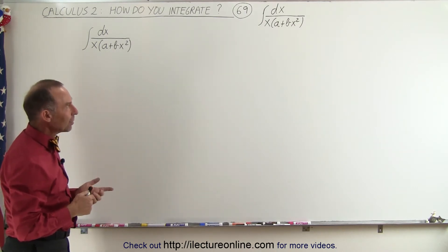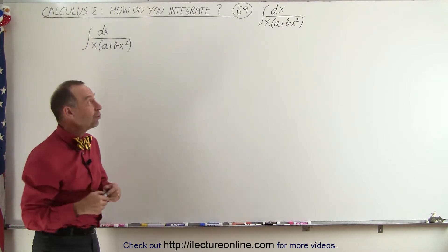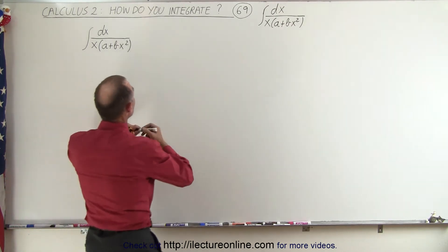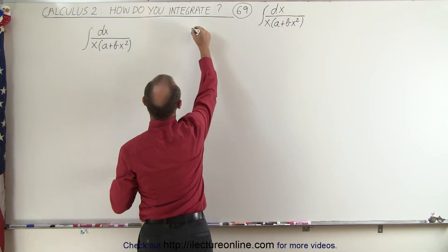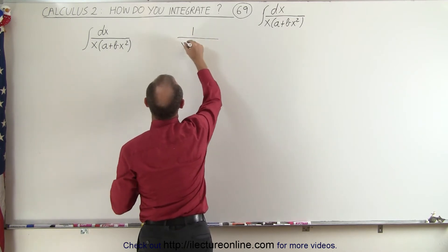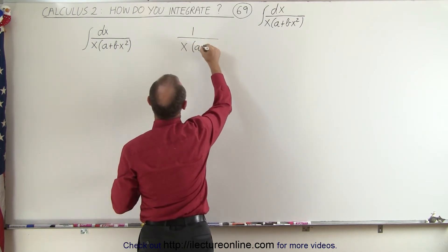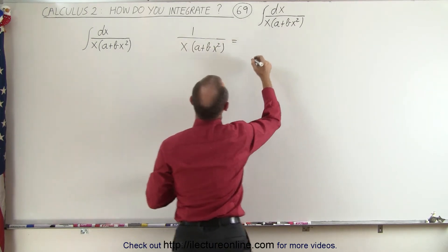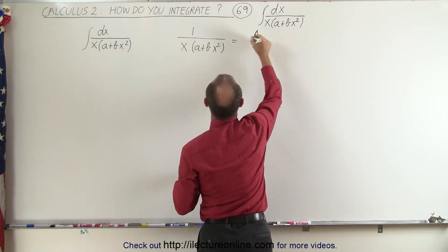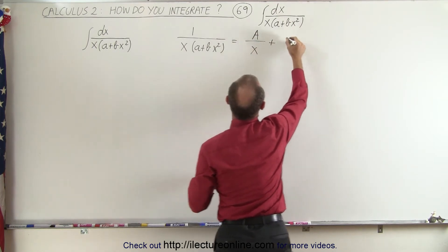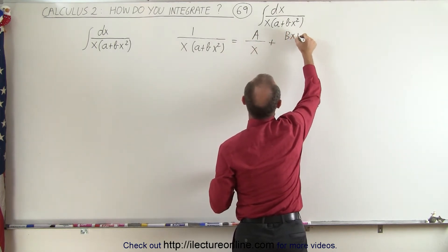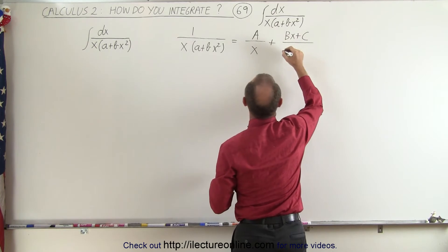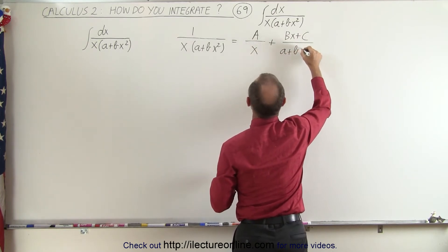In this case I think using partial fractions may do the trick. So what we want to do here is write the quantity or the fraction 1 over x times a plus bx squared. Write it as the sum of two fractions. So we have a divided by x plus bx plus c divided by a plus bx squared.